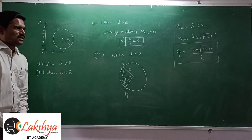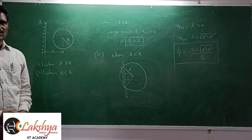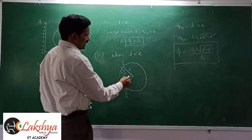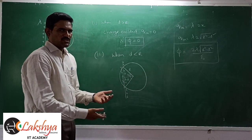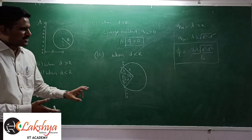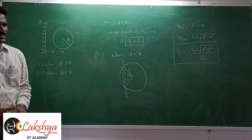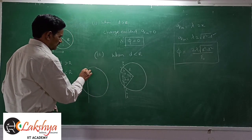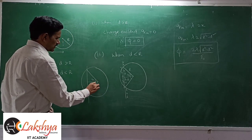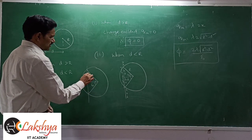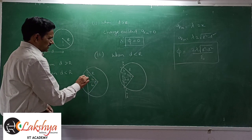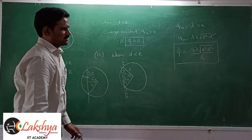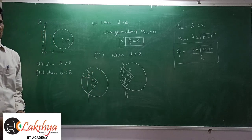In a recent IIT question, the total angle subtended was given as 120°. Dividing symmetrically gives 60° on each side. The chord half-length is R·sin60°, so total length inside is 2R·sin60°, and flux = 2R·sin60°·λ/ε₀.